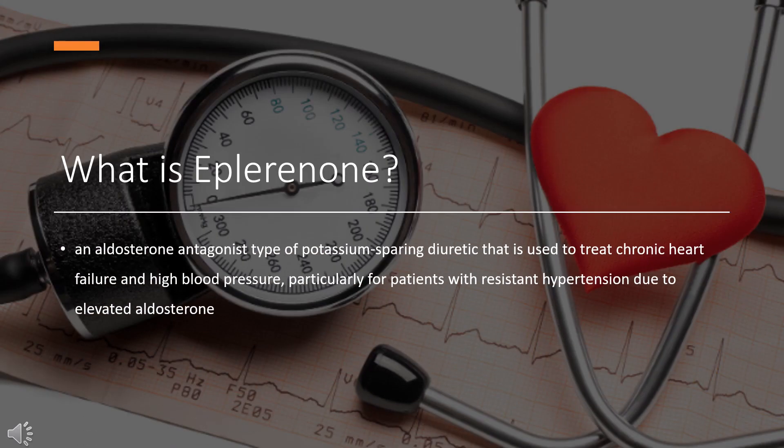Eplerinone, sold under the brand name INSPRA, is an aldosterone antagonist type of potassium-sparing diuretic that is used to treat chronic heart failure and high blood pressure, particularly for patients with resistant hypertension due to elevated aldosterone. Eplerinone is more selective than Spironolactone at the mineralocorticoid receptor relative to binding at androgen, progestogen, glucocorticoid, or estrogen receptors.